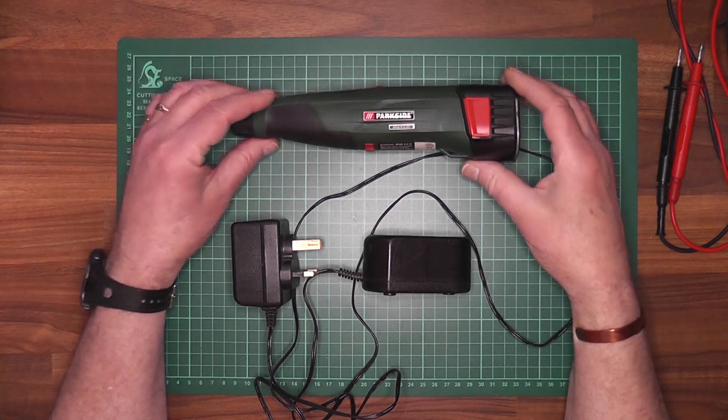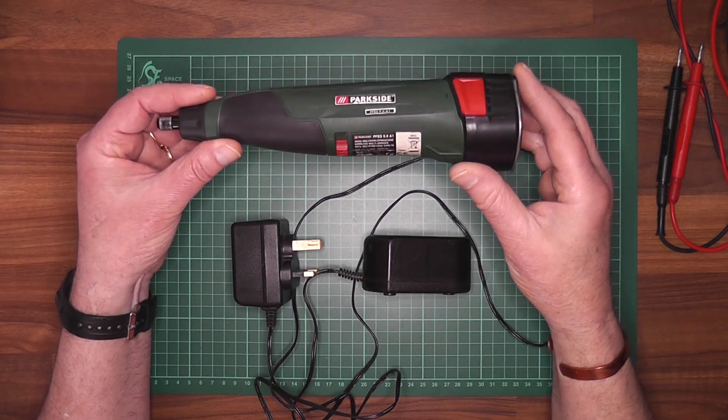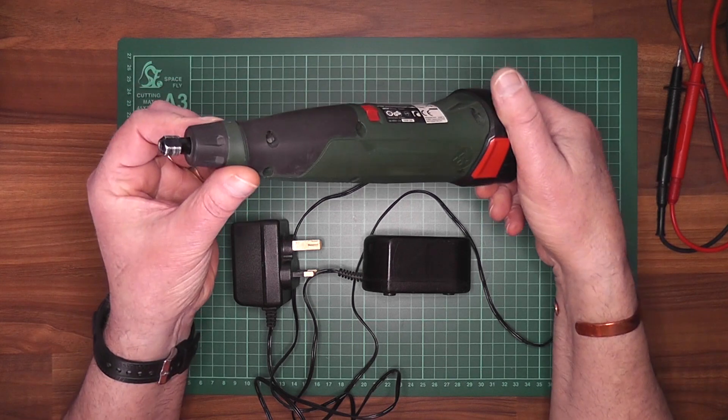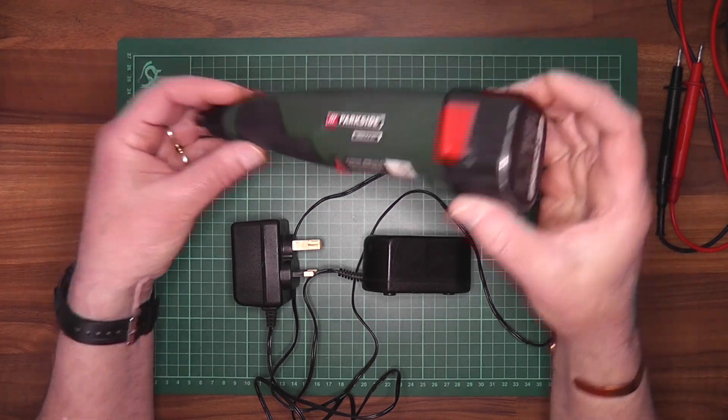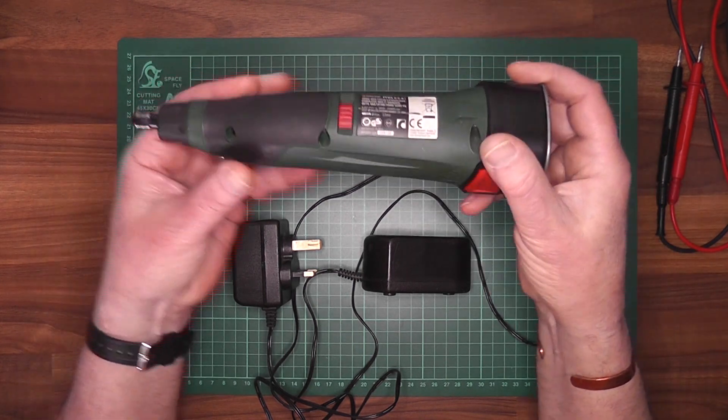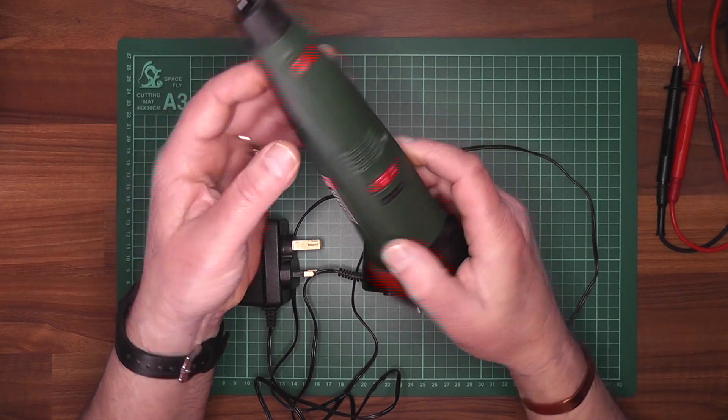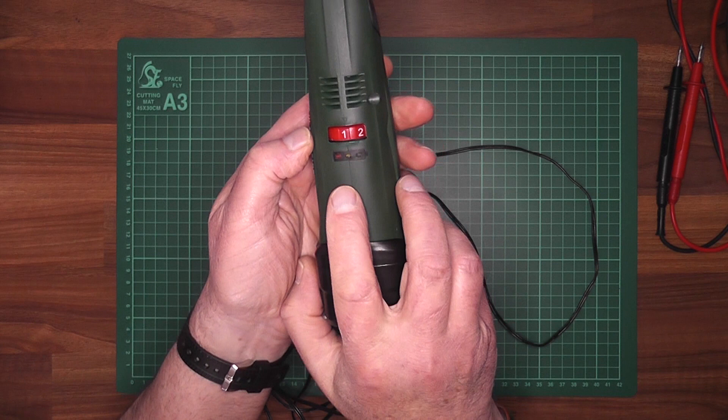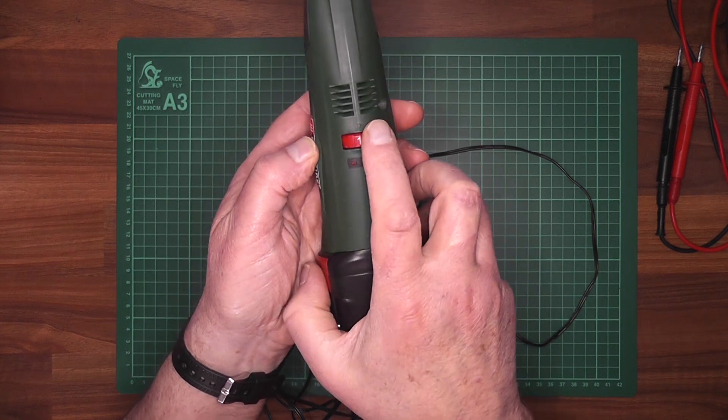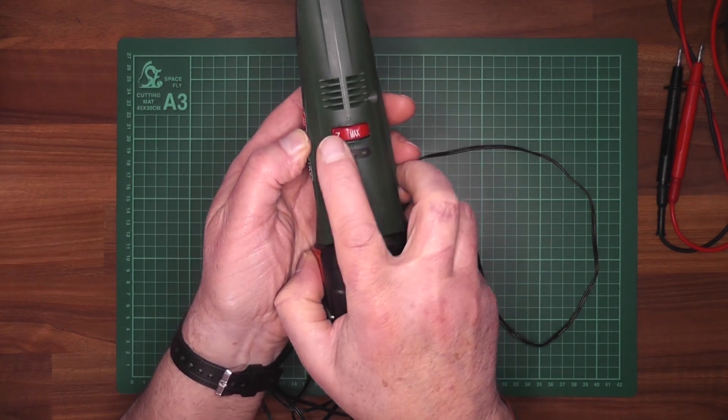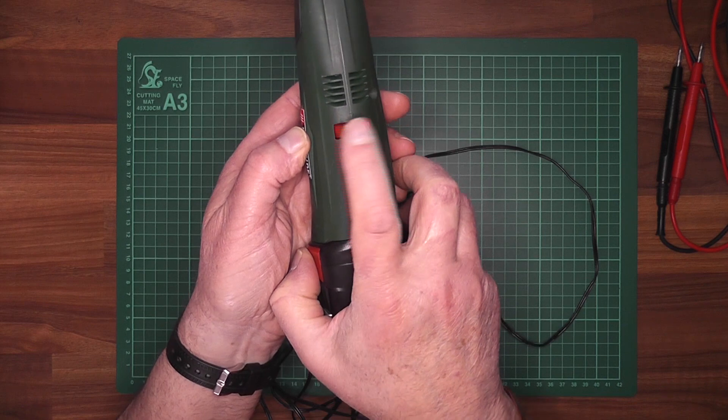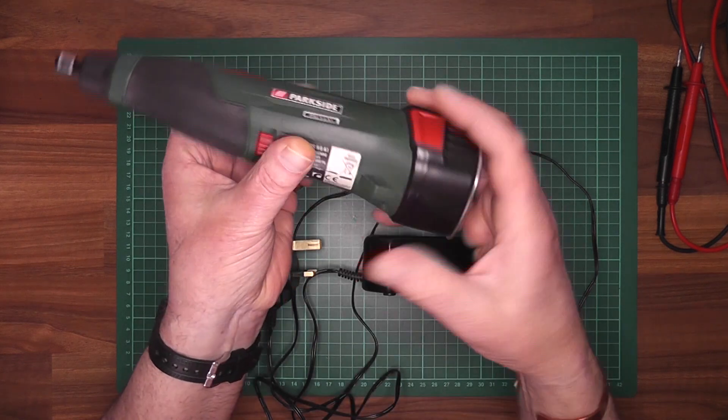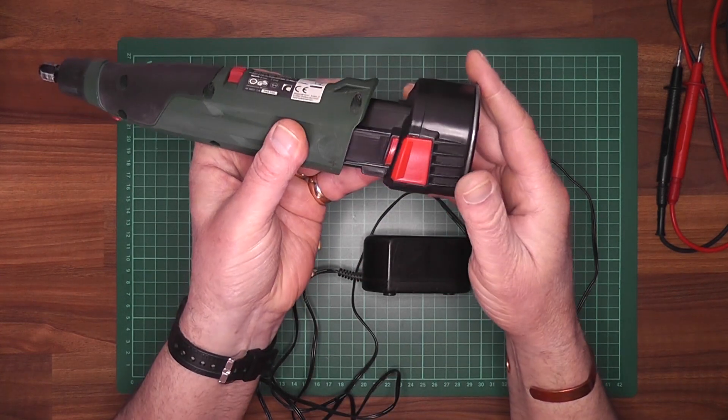Welcome to another episode. Now what you see before you is a little rotary grinder, cordless. Unfortunately, as you can see when I switch it on, there's no lighting. Turn it right up, nothing at all, and that's your little battery there.